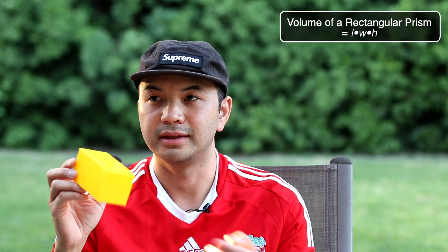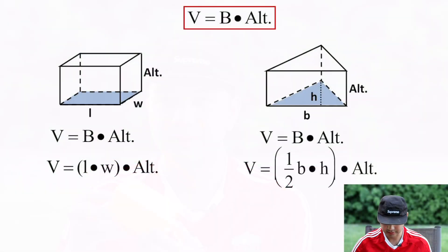Volume is base area times the altitude. A lot of people remember volume as just multiply all the sides — that's true for rectangular prisms but not exactly true for anything else. If you have a rectangular prism, yes, you multiply the length, the width, and the altitude. Let's move on with some examples.